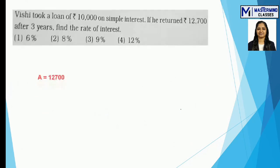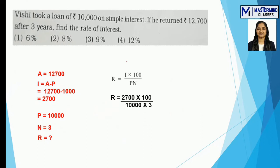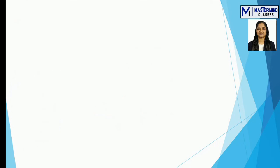Next example: amount = 12700, principal = 10000, N = 3 years. Find the rate of interest. First, I = A − P = 2700. Using R = (I × 100) / PN, substitute and reduce the zeros: after cancellation, 27/3 remains, and since 3×9=27, R = 9%. That is option number 3.